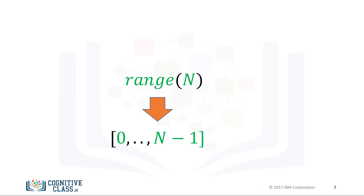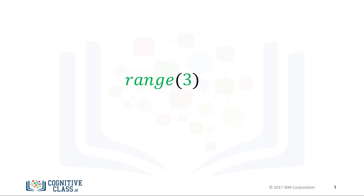The range function outputs an ordered sequence as a list. If the input is a positive integer, the output is a sequence that contains the same number of elements as the input, but starts at zero. For example, if the input is 3, the output is the sequence 0, 1, 2.